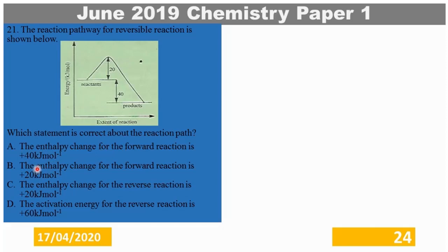Option B says the enthalpy change for the forward reaction is plus 20 kJ per mole — that is not true, as plus 20 kJ per mole is the activation energy of the forward reaction. Option C says the enthalpy change for the reverse reaction is plus 20 kJ per mole. The reverse reaction is endothermic, that is true, but the enthalpy change is not 20 — it is plus 40 kJ per mole.